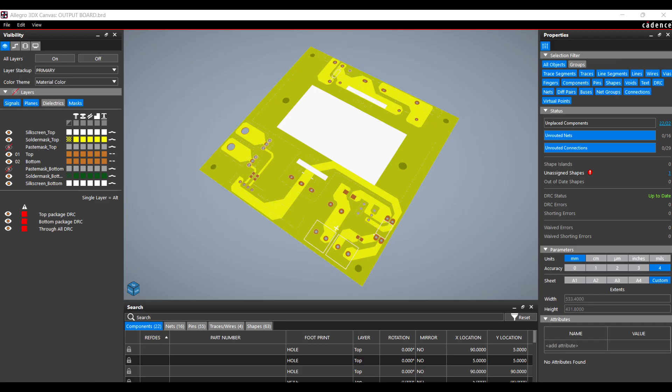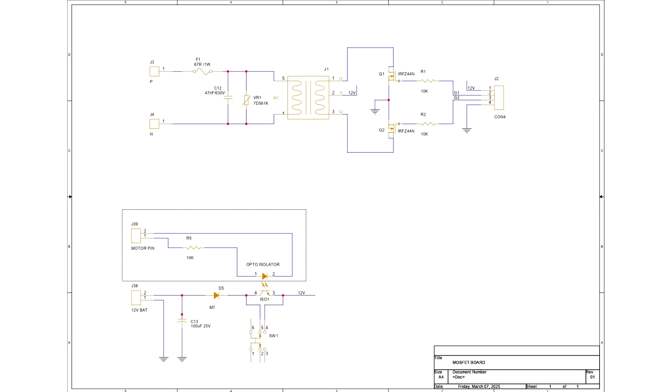These pulses then go to the MOSFET port, which includes a MOSFET, a transformer, and capacitors. The MOSFET amplifies the pulses, which the transformer then converts to a higher voltage AC output. Capacitors filter the output for a smooth AC waveform.